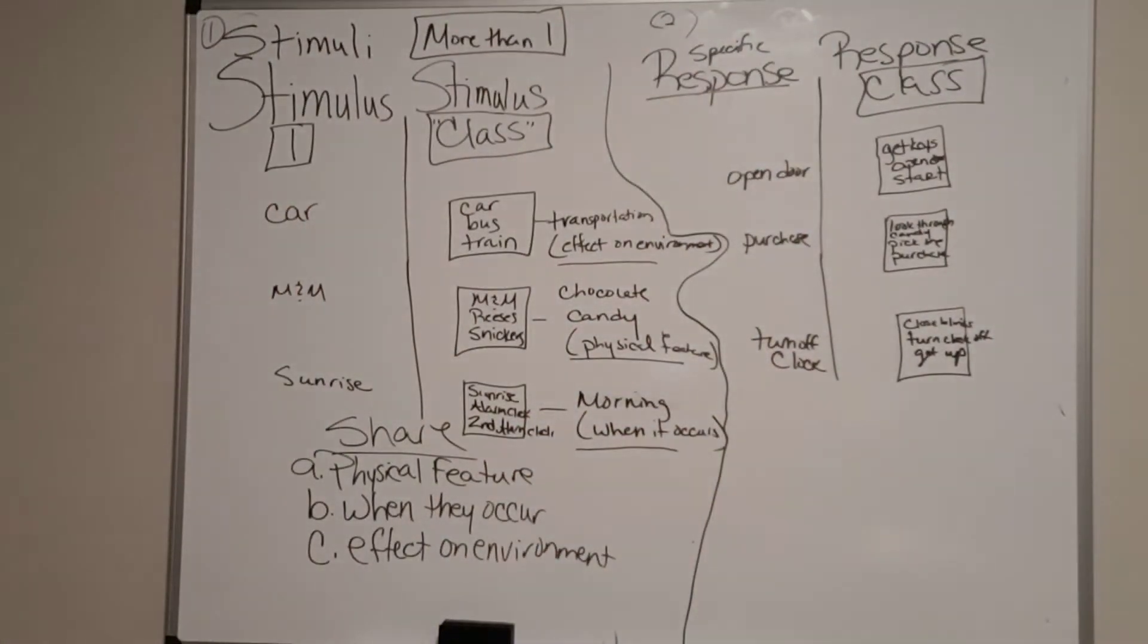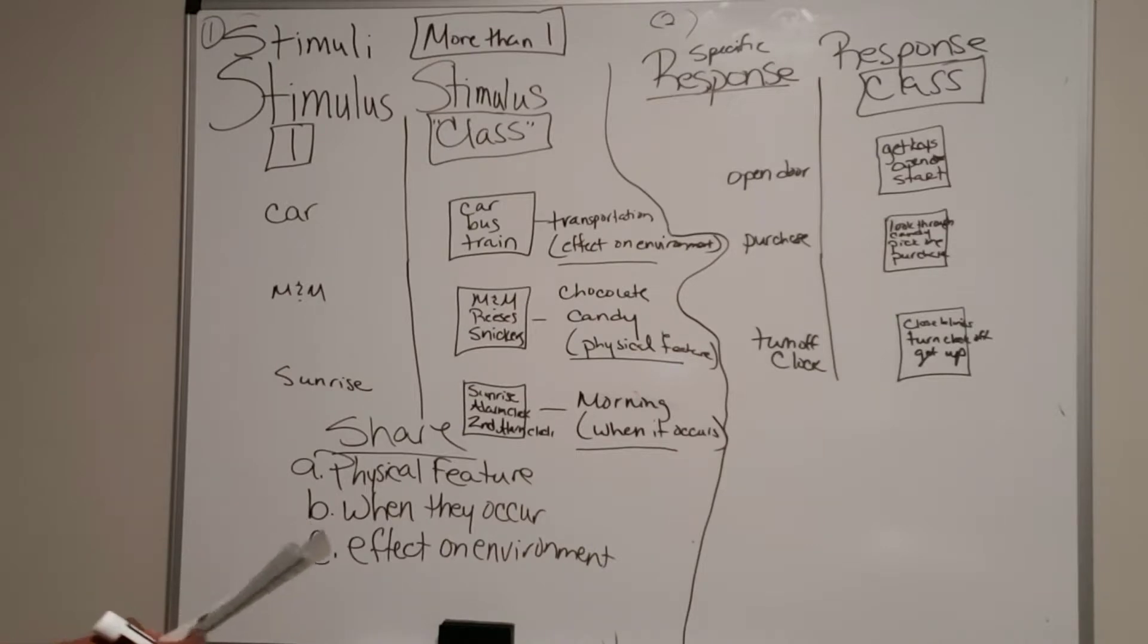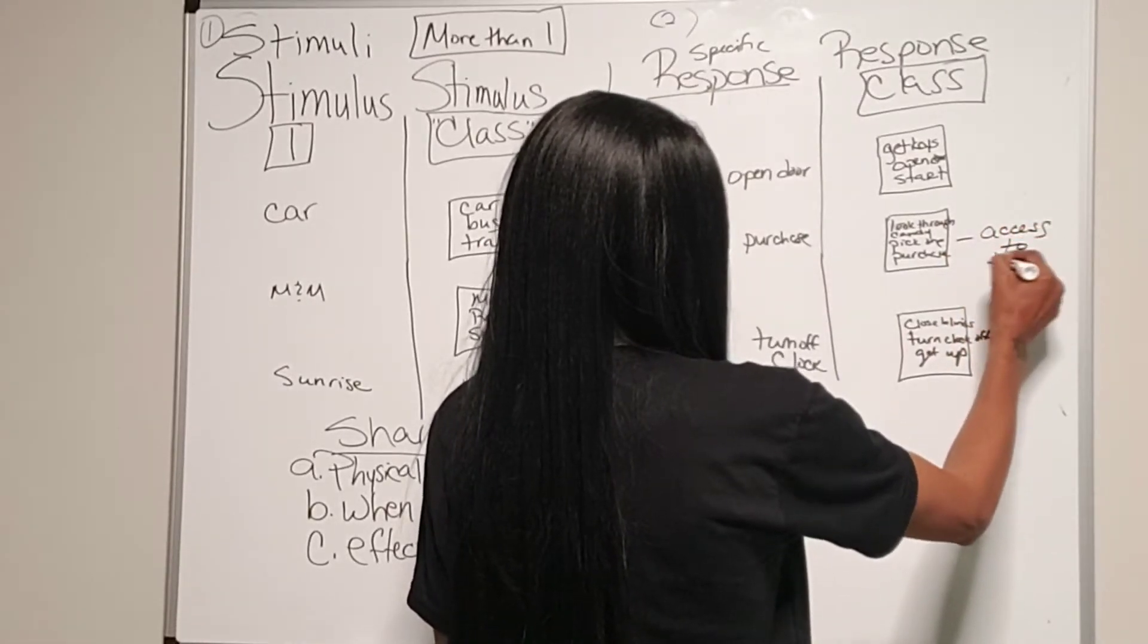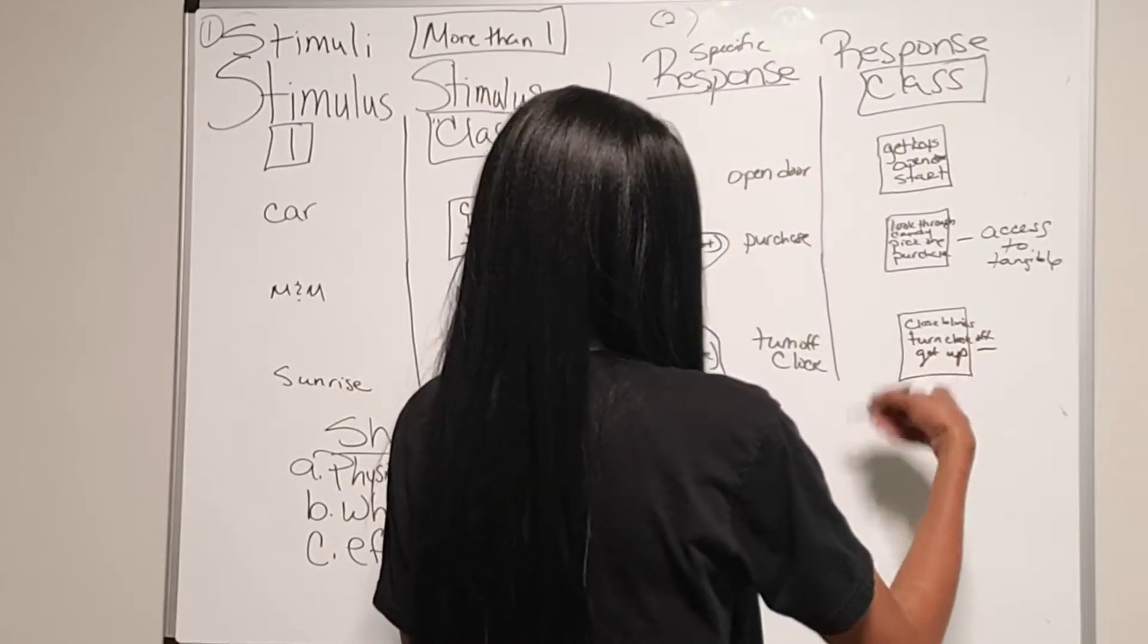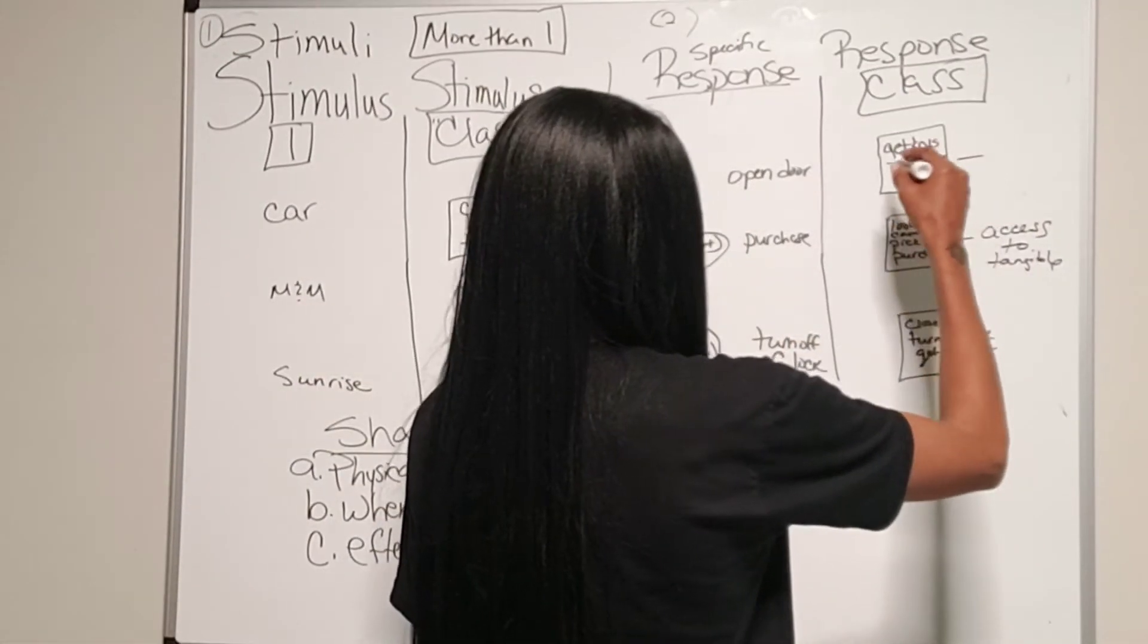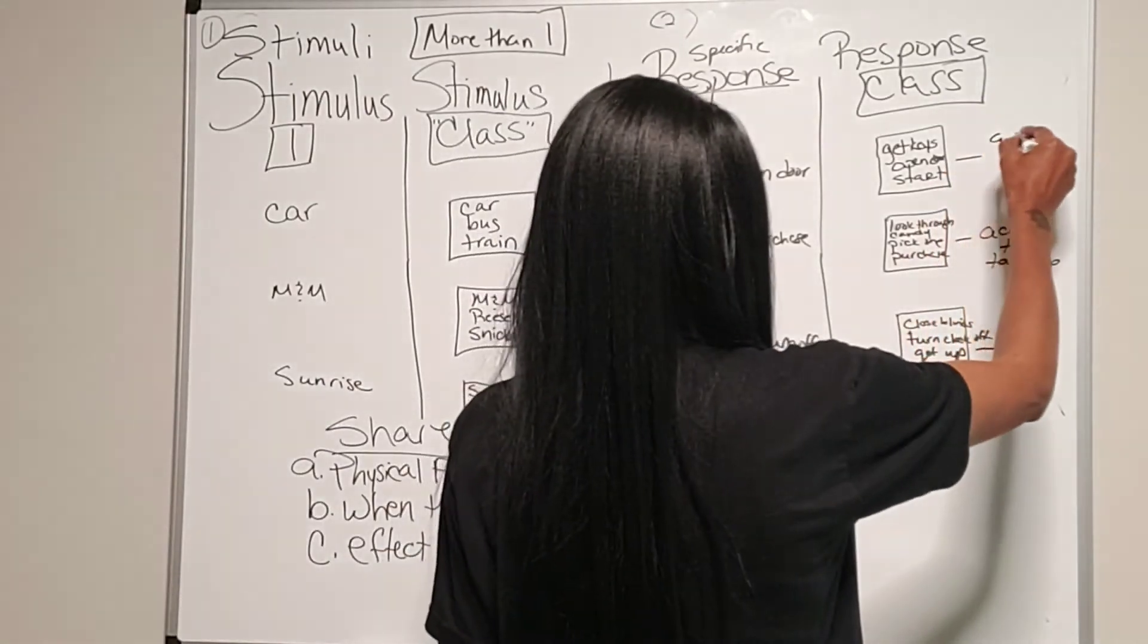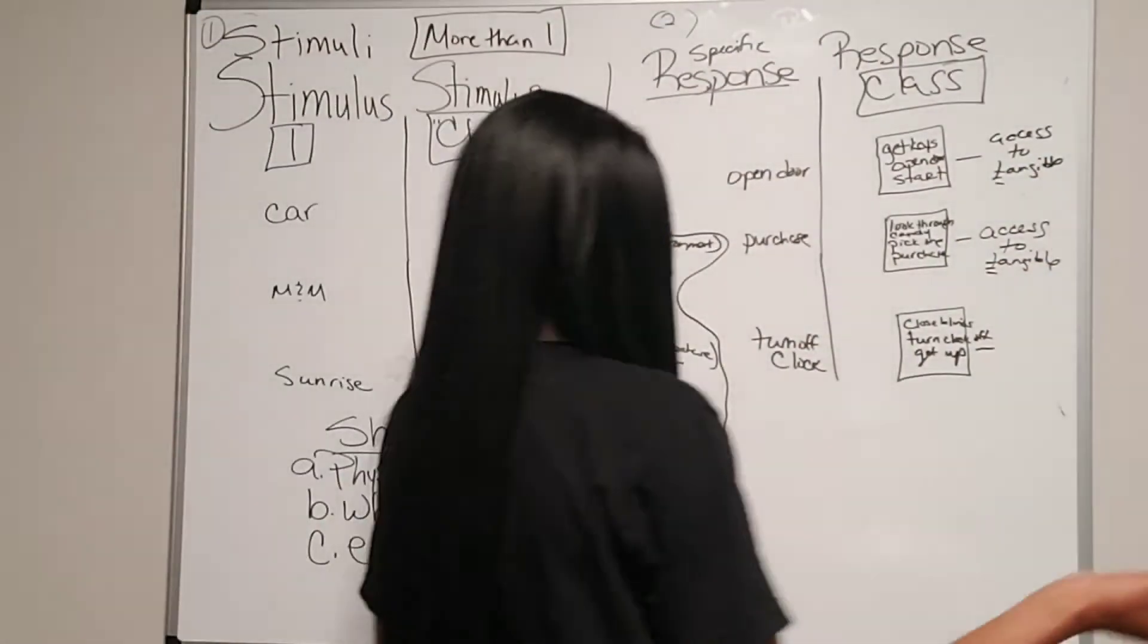Usually when we're talking about responses, just like the stimulus share, the response is going to share the same function. So when you get your keys, you open your door and you start, and you look through the candy, you pick one you purchase, this is going to give you your access to the tangible item. All of these lead to you getting the candy. All of the examples I kind of picked are kind of leaning more towards access because you're going to get access to where you're going.